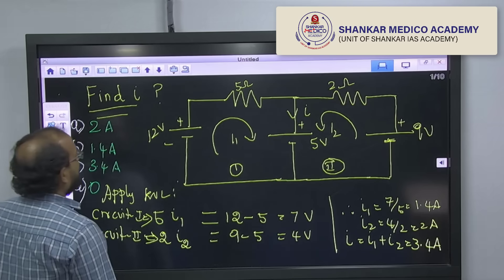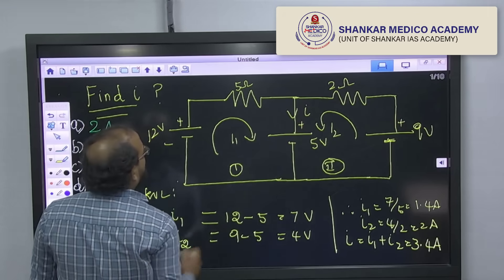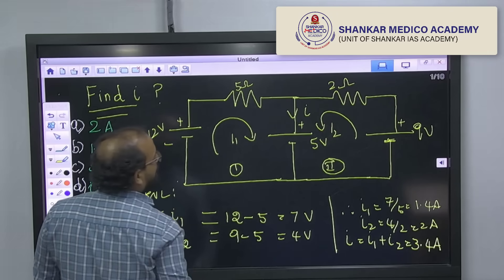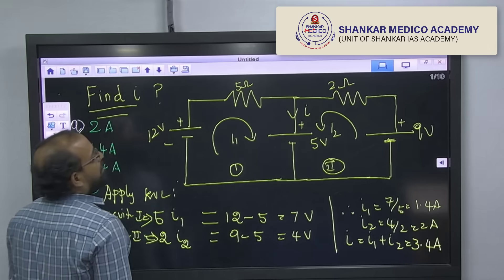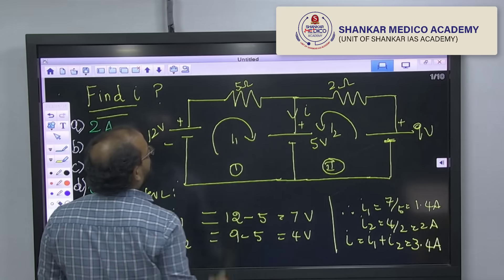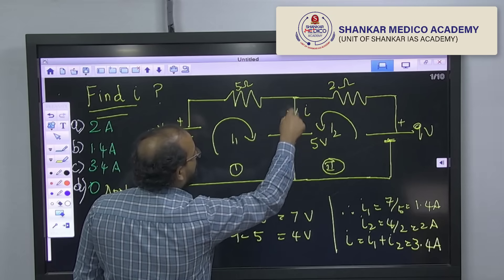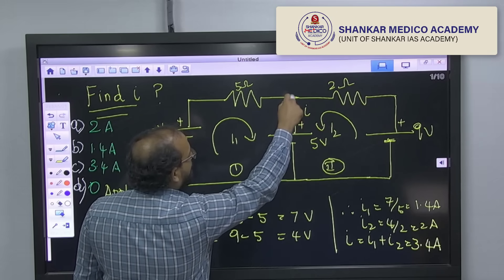This is a circuit diagram. They are given a circuit diagram with two battery sources with 12 volt and 9 volt and another one 5 volt. Then they are given some resistors 5 ohm and 2 ohms. They ask you to find out the current flowing in this 5 volt battery.